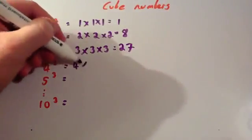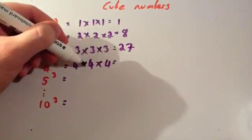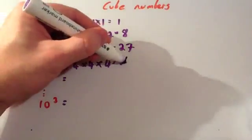4 cubed, that's 4 times 4 times 4. 4 times 4 is 16, times 4 is 64.